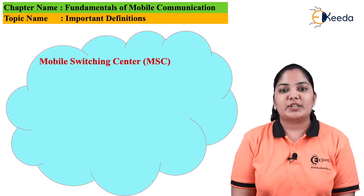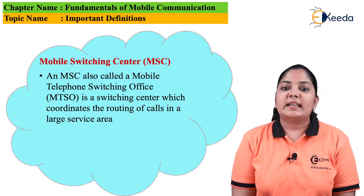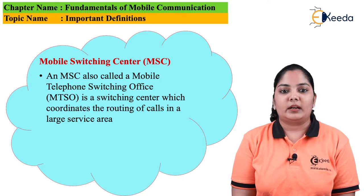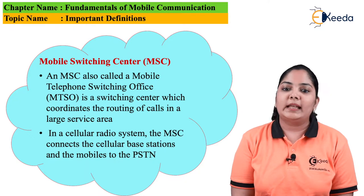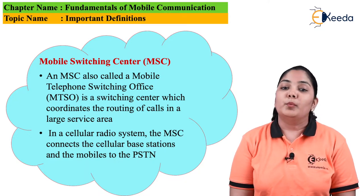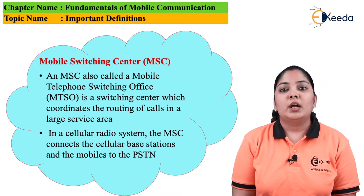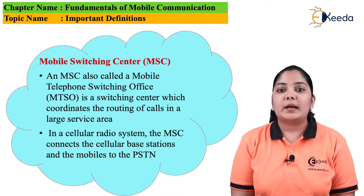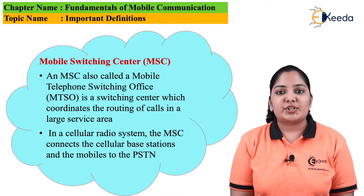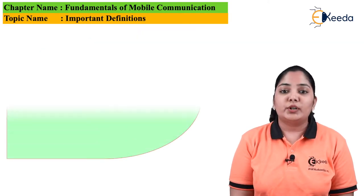Third definition: Mobile switching center (MSC). An MSC, also called a mobile telephone switching office, is a switching center which coordinates the routing of calls in a large service area. In cellular radio systems, the MSC connects the cellular base station and the mobile station to the PSTN. So mobiles communicate with base stations, base stations communicate with the MSC, and the MSC connects to PSTN.